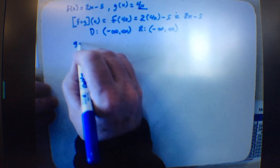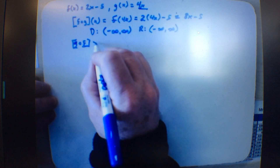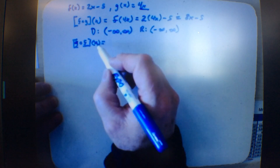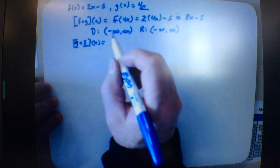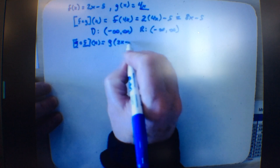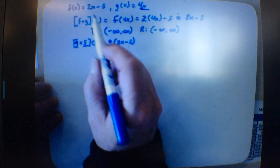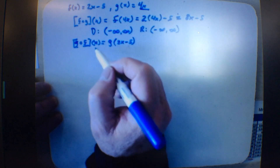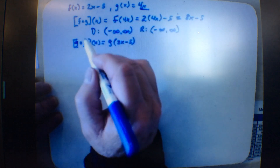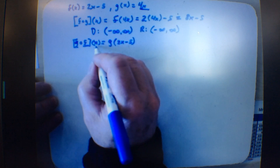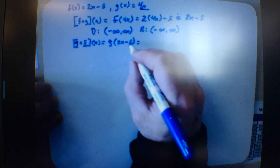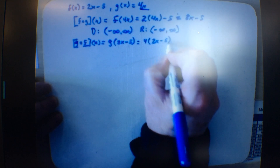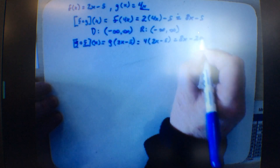If I turn it around and say g of f of x, I put x into the f function first and get 2x minus 5. Then g of that means I take 4 times the quantity 2x minus 5, which gives 8x minus 20.